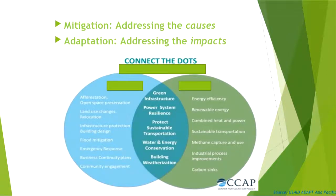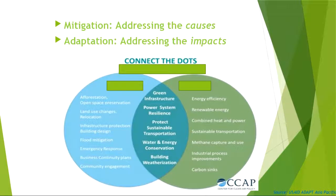The diagram in this slide emphasizes the difference between adaptation and mitigation, and it also shows the synergies between both of them. Mitigation refers to addressing the causes of climate change by limiting and decreasing greenhouse gas emissions.